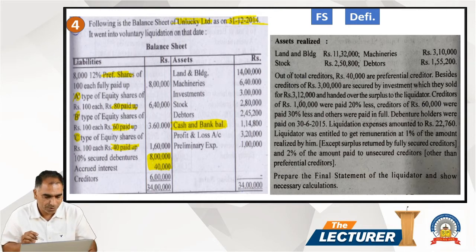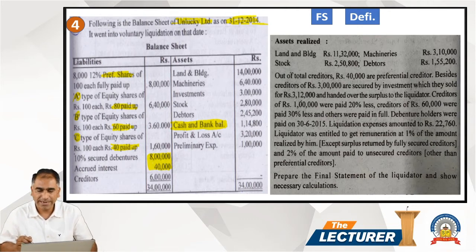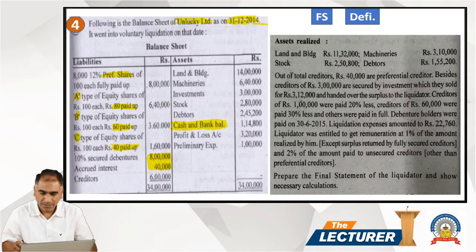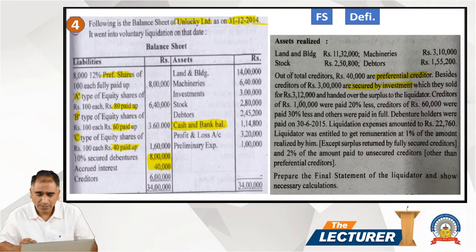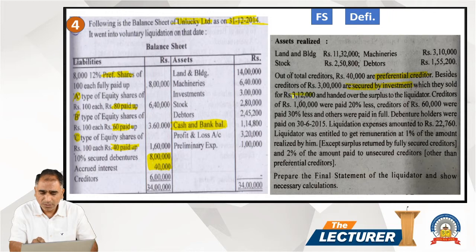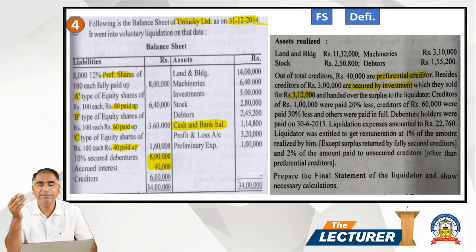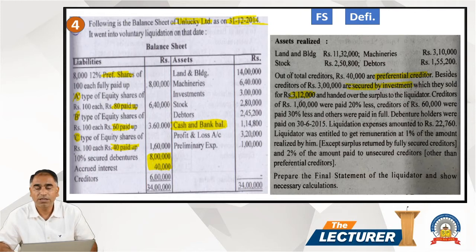Creditors are normally unsecured, but we may get more information in the adjustments. Asset realizations — land, building, stock, machinery — their total realization amounts will be used in the final statement. Out of total creditors, ₹40,000 are preferential creditors. Creditors of ₹3 lakh are secured by investment. That investment was sold for ₹3 lakh 12,000, so after settling the ₹3 lakh liability, the surplus of ₹12,000 is handed over to the liquidator — this is the surplus from secured creditors.